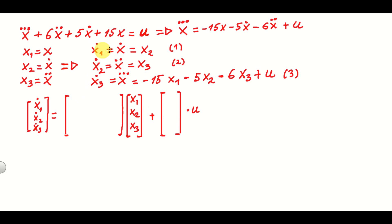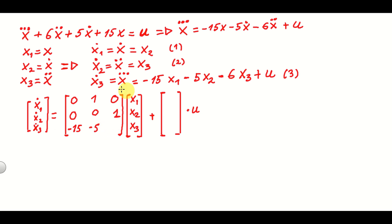Let's populate the matrices. From the first equation x1-dot equals x2, so the first row is [0, 1, 0]. From x2-dot equals x3, the second row is [0, 0, 1]. From x3-dot equals minus 15x1 minus 5x2 minus 6x3, the third row is [-15, -5, -6]. The B matrix is the column vector [0, 0, 1], since only the third equation has u. This is our A matrix and this is our B matrix.